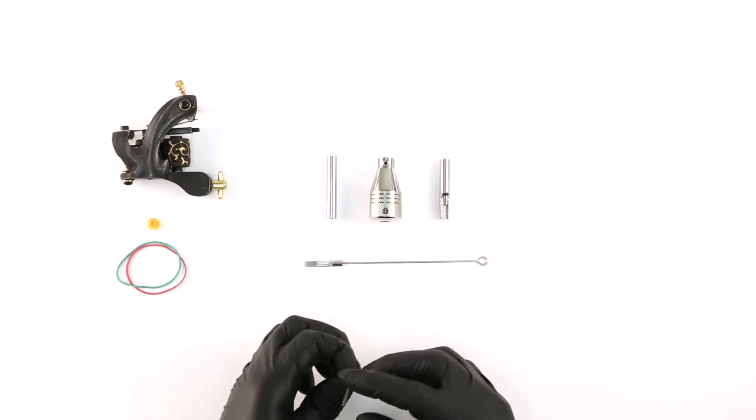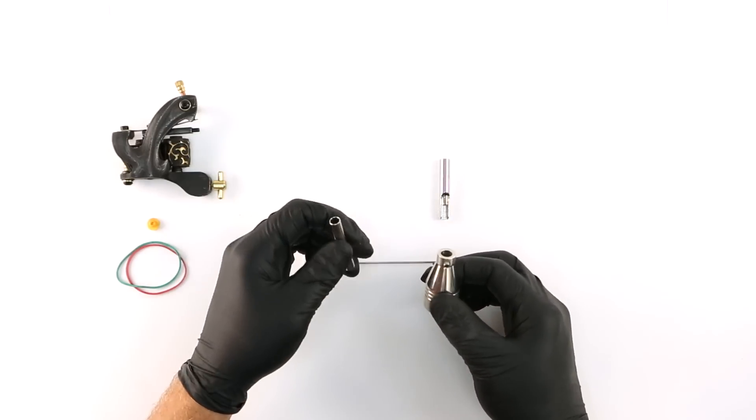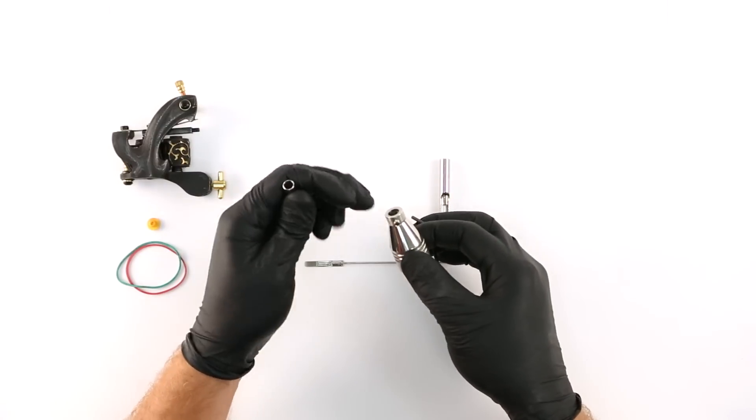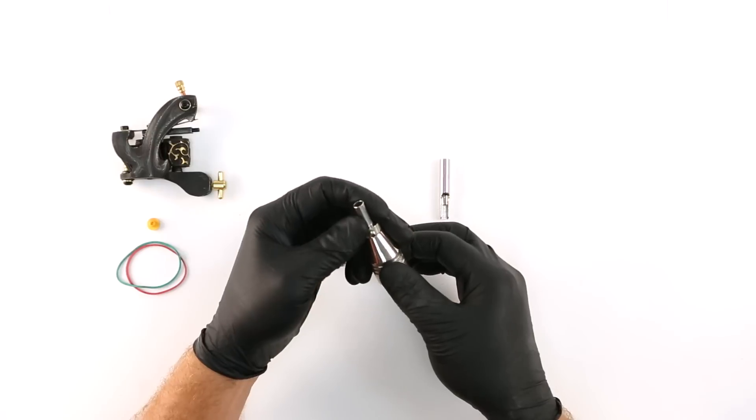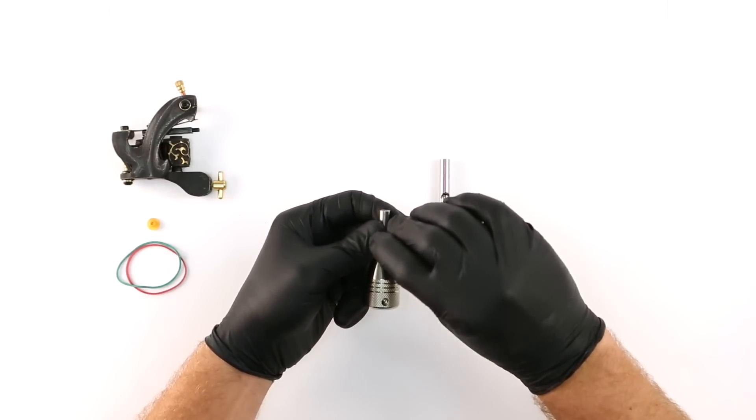To assemble the tube we connect the stem and the tip to the grip. This grip happens to use set screws to hold everything together. First you slide the stem in the back end of the grip and tighten the screw with a hex wrench to secure it in place. Then do the same at the other end for the tip.